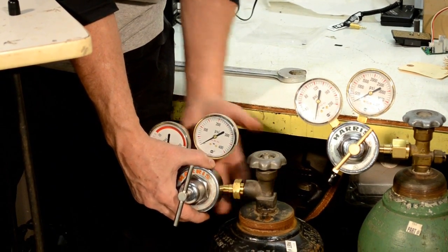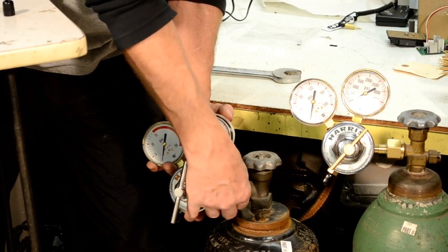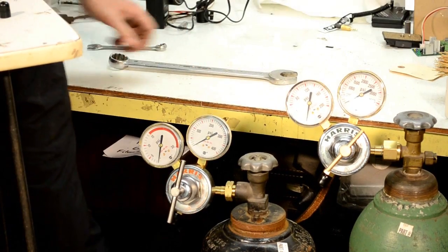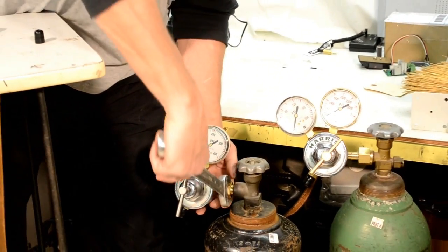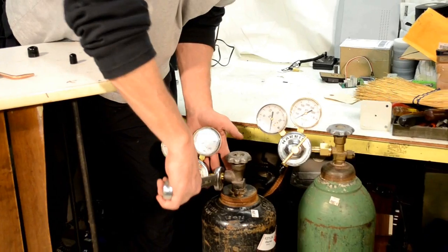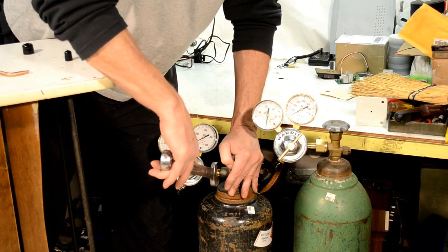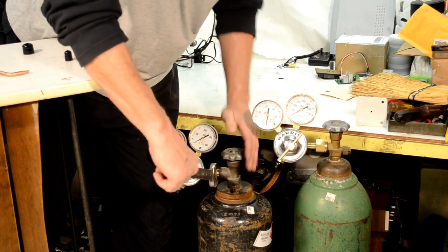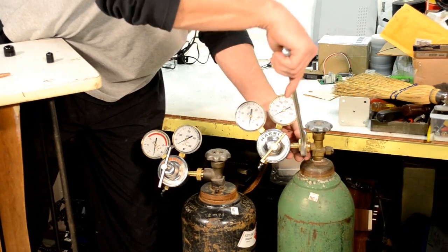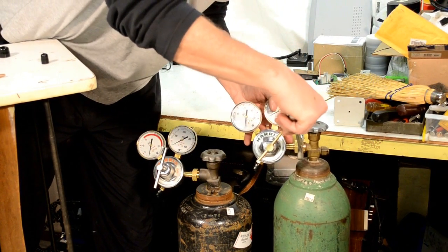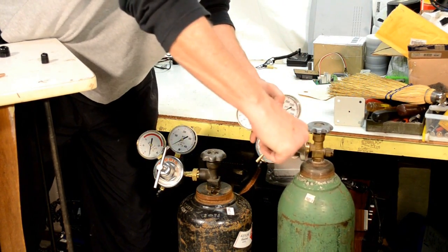Then when we get these on, just kind of lightly tighten them up. It's brass, so it should seal naturally. I would say probably three, four pounds of torque at the most. Not a lot.